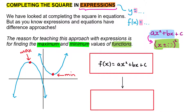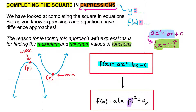Many questions will ask you to rewrite the function in the form f(x) = a(x − p)² + q, where the p value refers to the x-coordinate of the turning point and the q value refers to the y-coordinate of the turning point. So you'll often be asked either to rewrite an expression in this form or to find the maximum or minimum of a function. If you get something like that, you know you're completing the square in an expression and following the method we use in the first example.